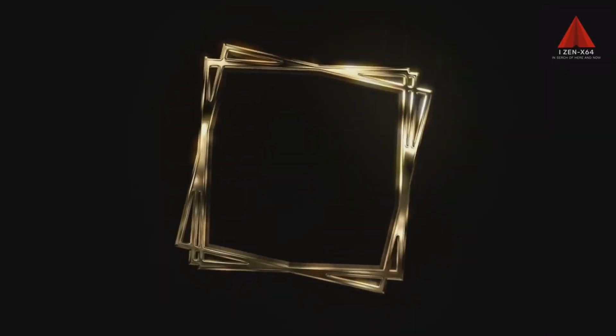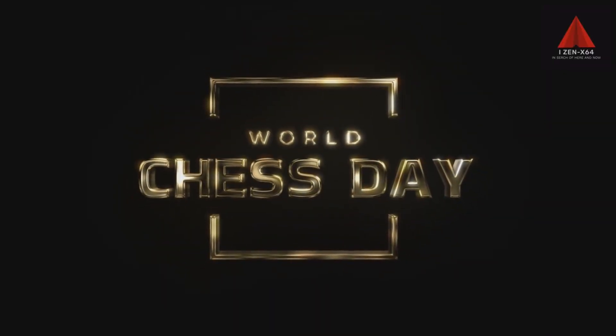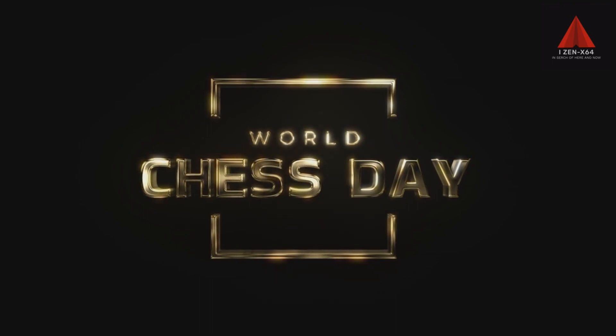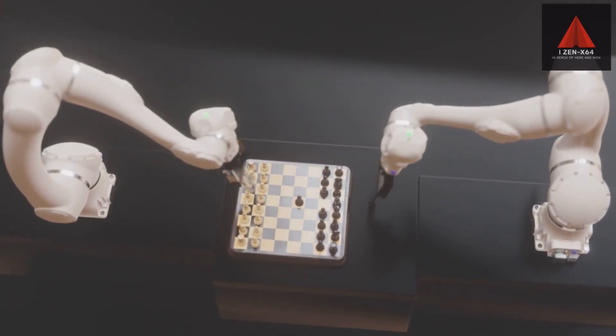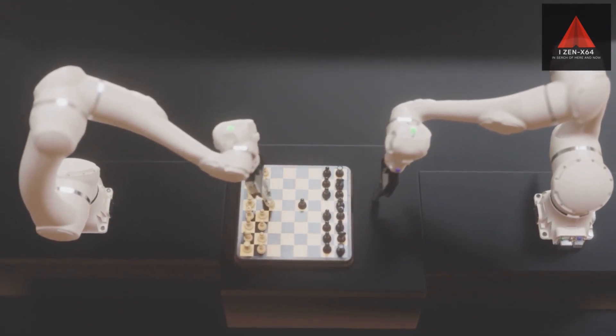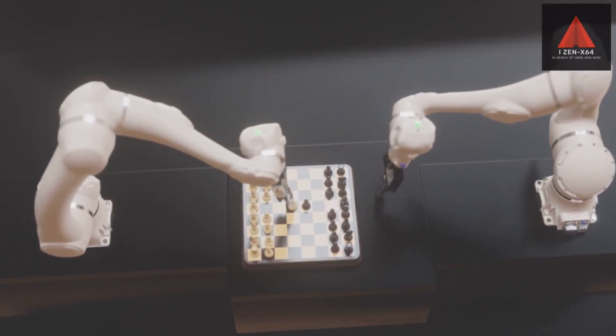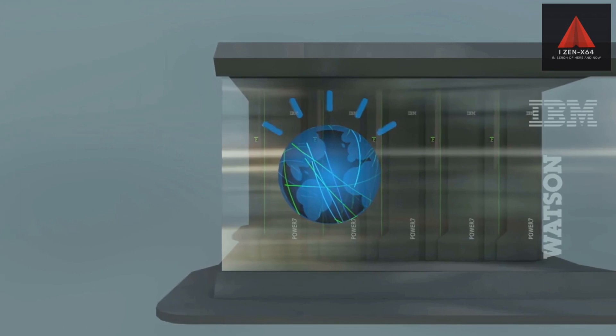In 1997, IBM's Deep Blue defeated world chess champion Garry Kasparov. This wasn't just a win for a machine, it was a landmark event that showed that AI could rival human intelligence in specific tasks. Move ahead to 2011,